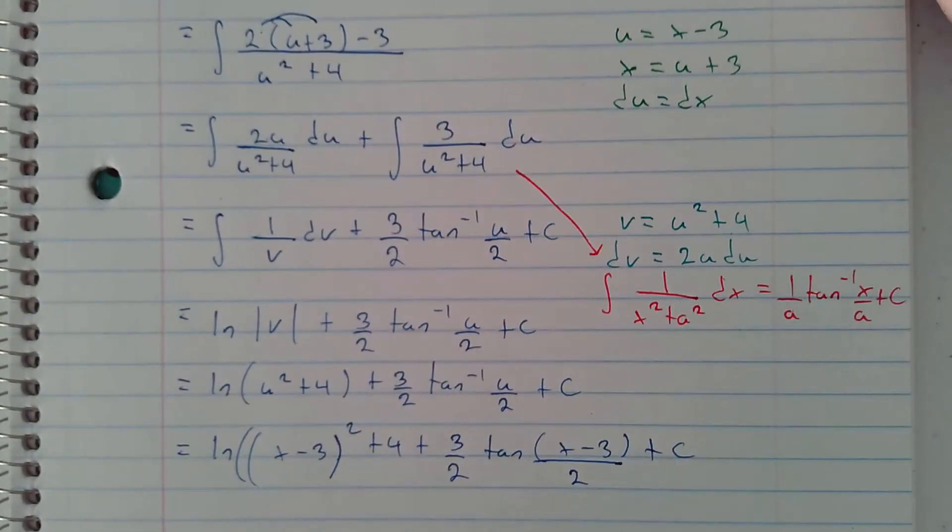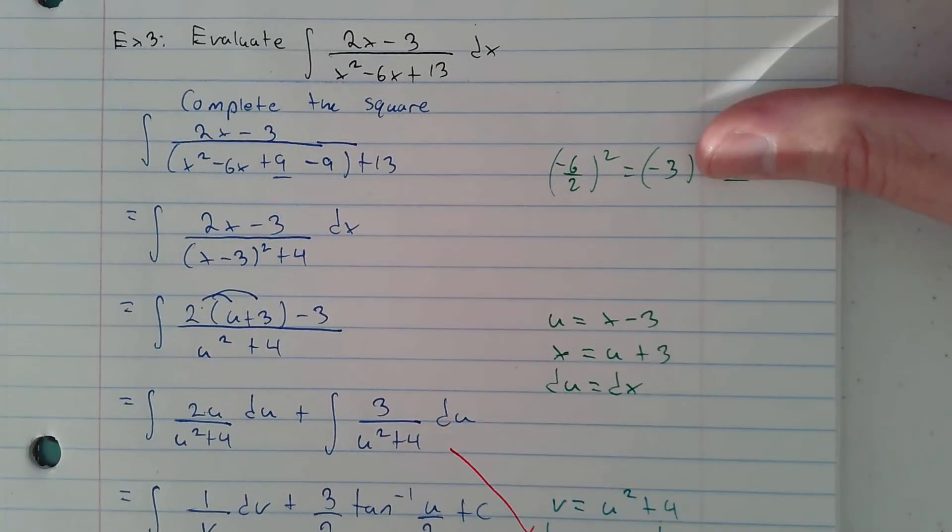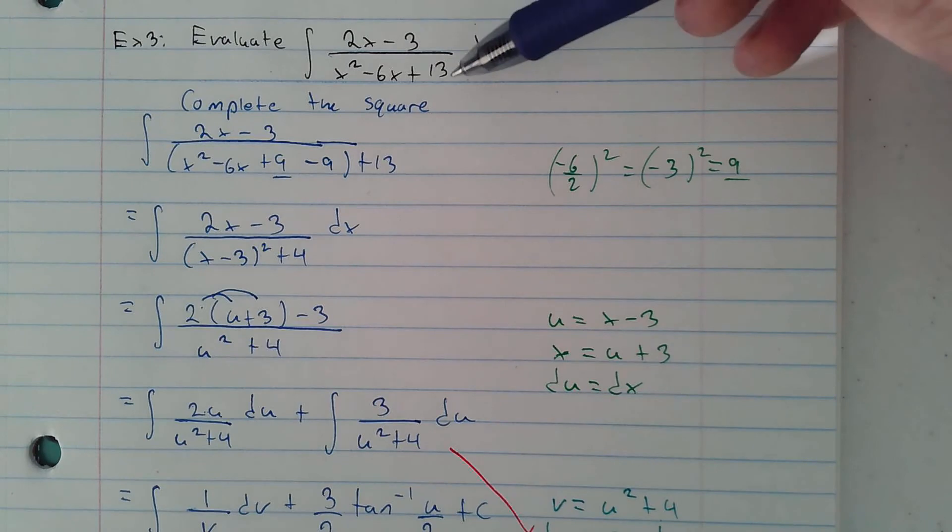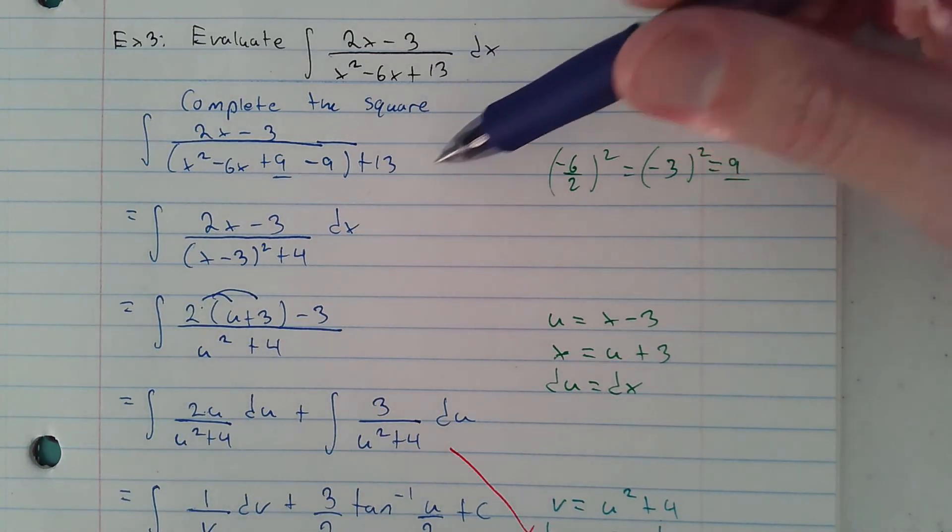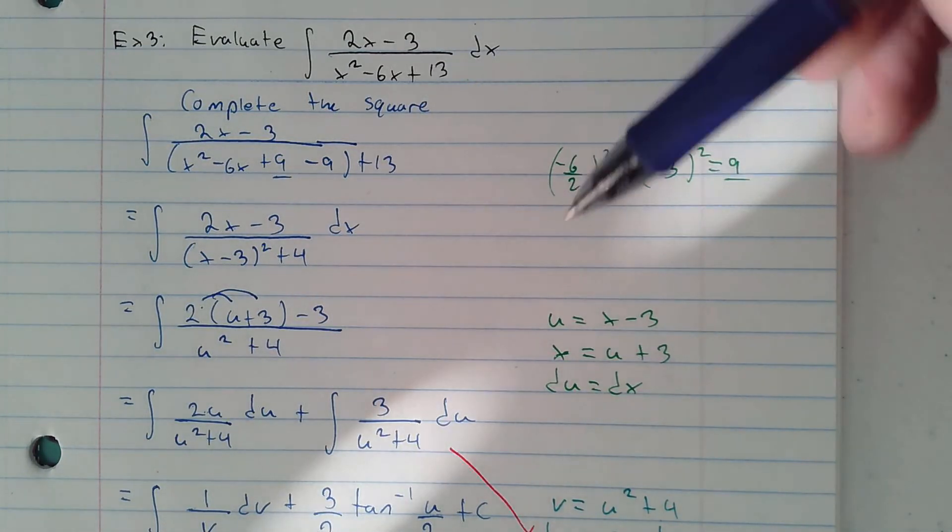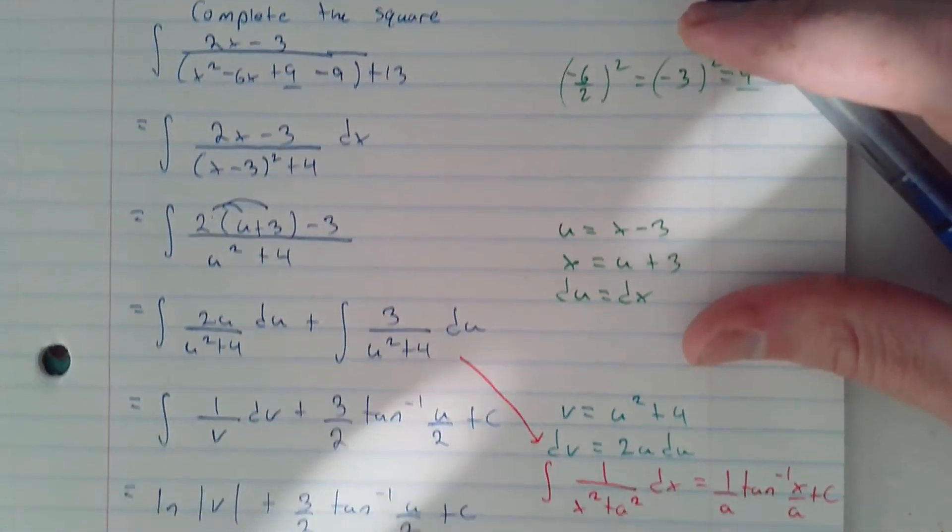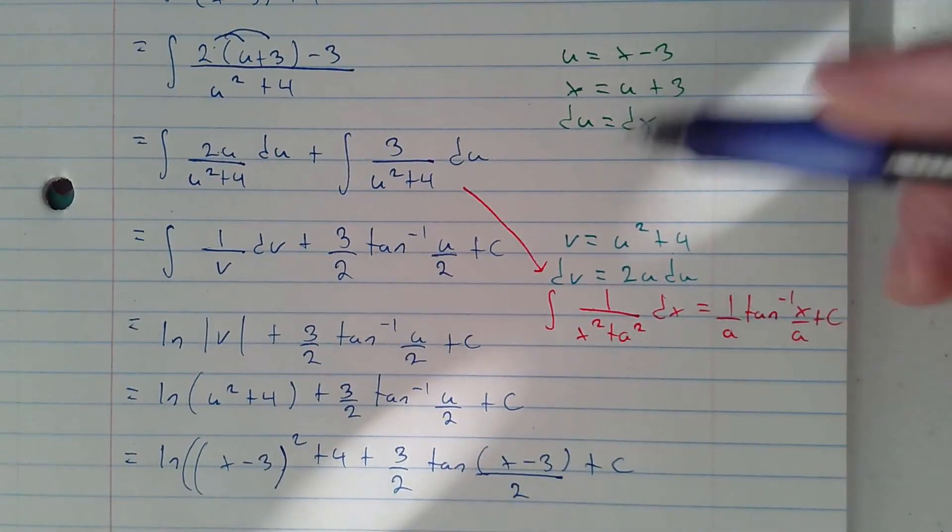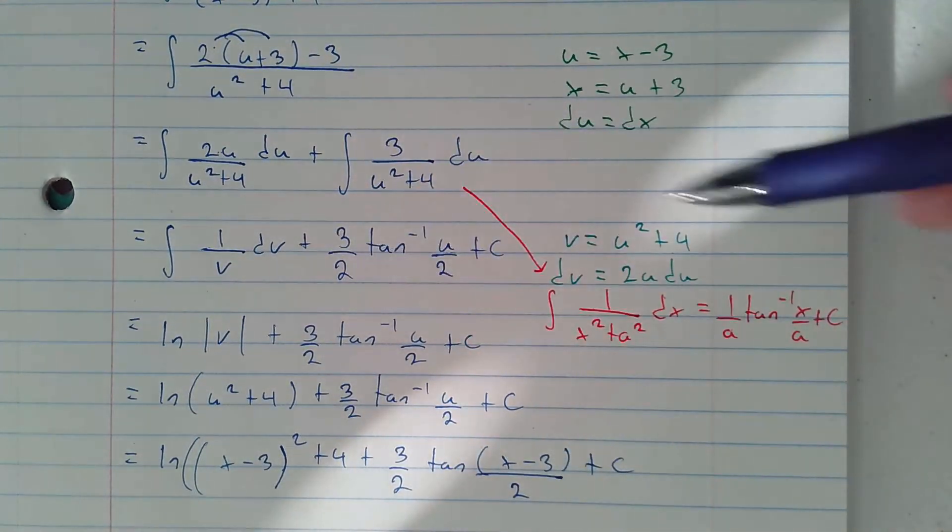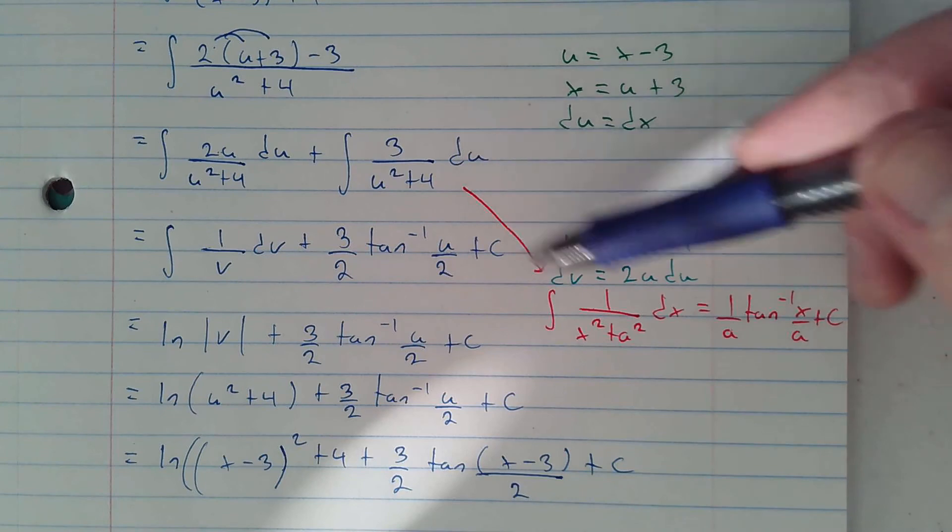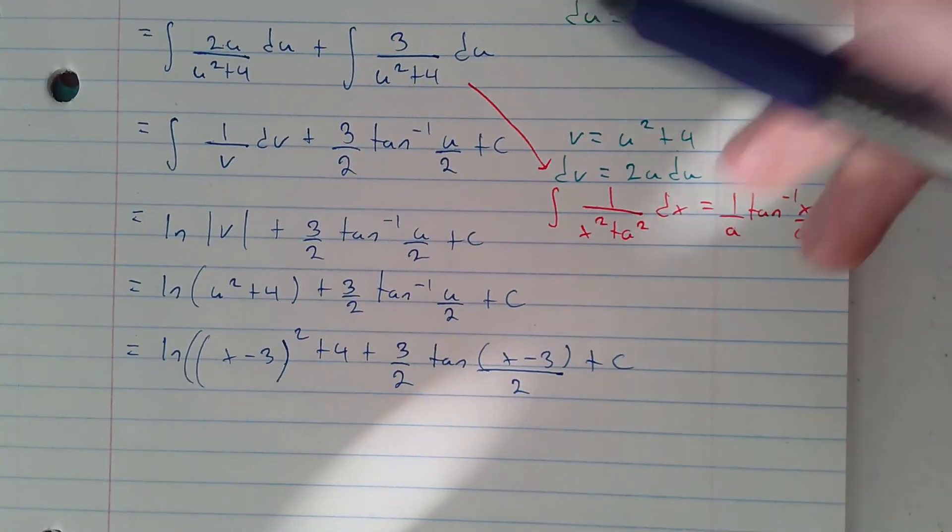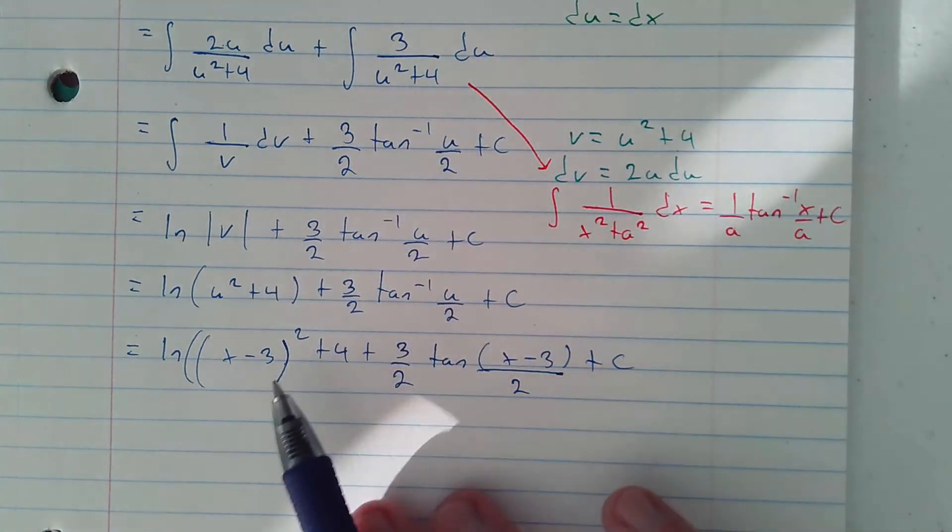So that was the integral for 2x minus 3 over x squared minus 6x plus 13: completing the square, u substitution, v substitution, and the integral that gives us inverse tangent. Then you substitute back in v, and then substitute back in u.